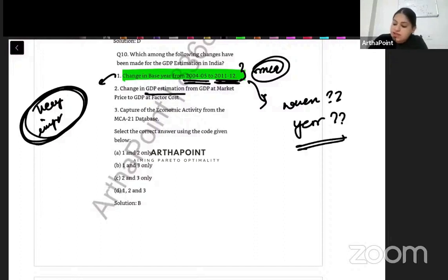Change in GDP estimation from GDP at market price to GDP at factor cost? No, that has not happened. We are still doing it at market price. Capture of economic activity from MCA-21 database. Yes, this is correct. That you now have economic activities being captured from MCA database.